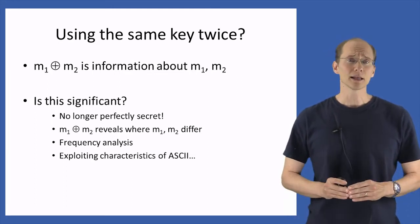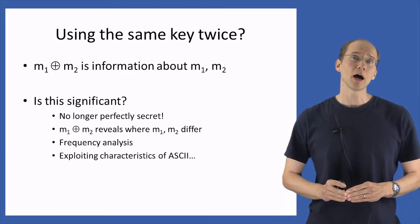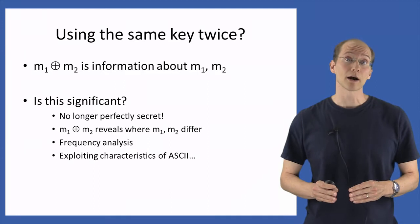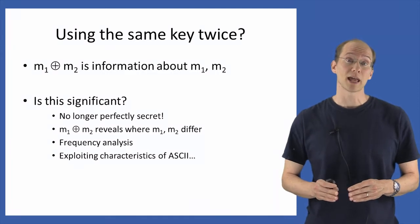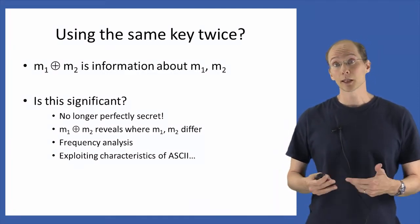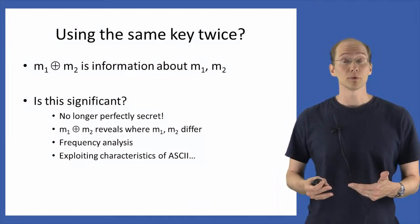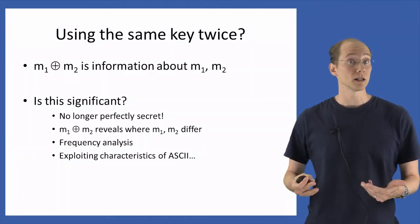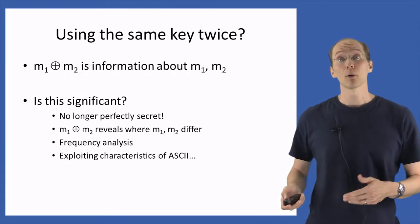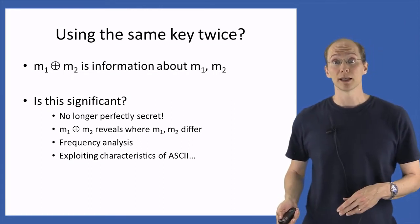Finally, it turns out that by exploiting some particular characteristics of the ASCII representation, the XOR of M1 and M2 can reveal lots more information. I want to go through that in more detail next.